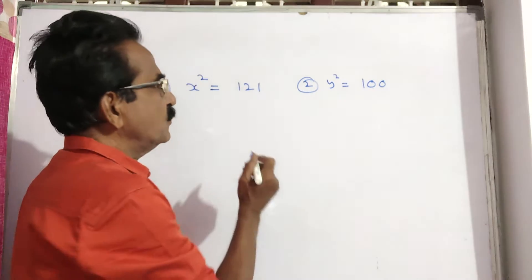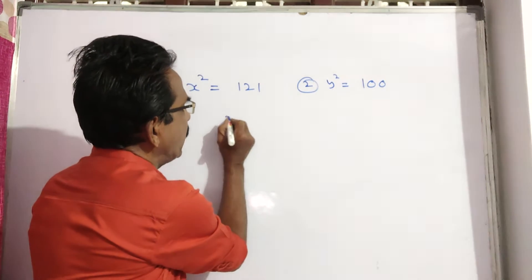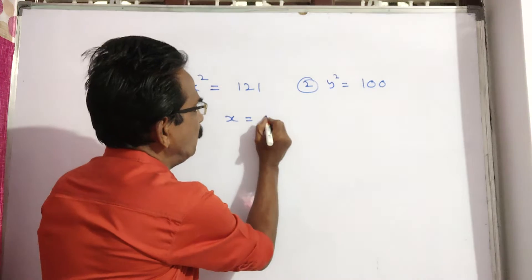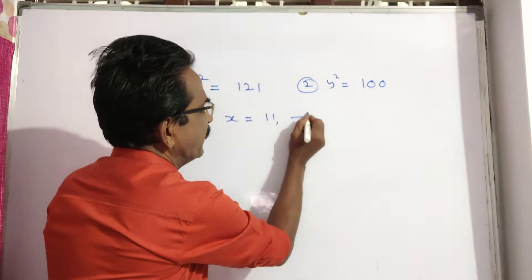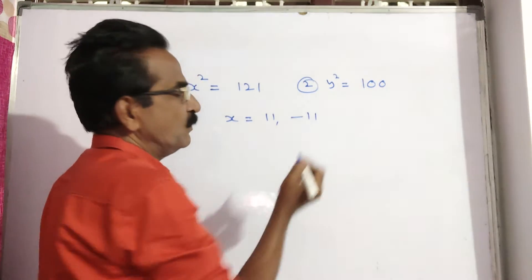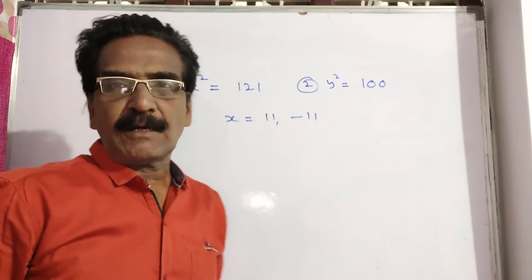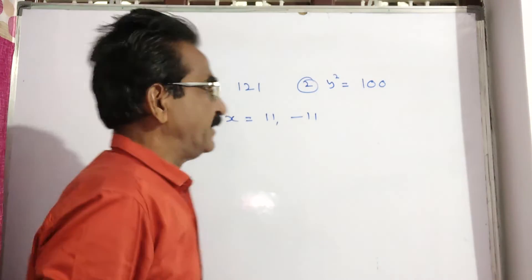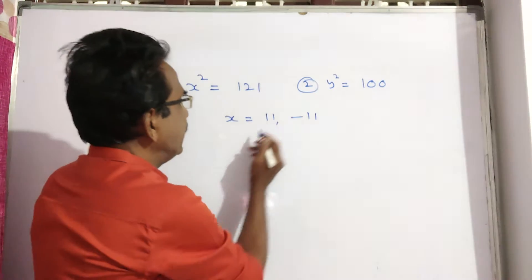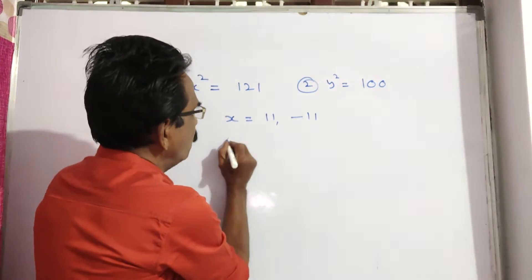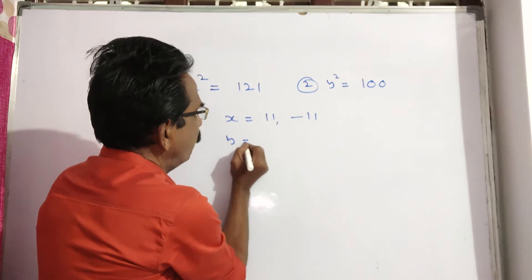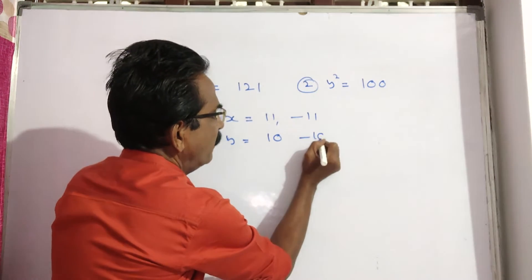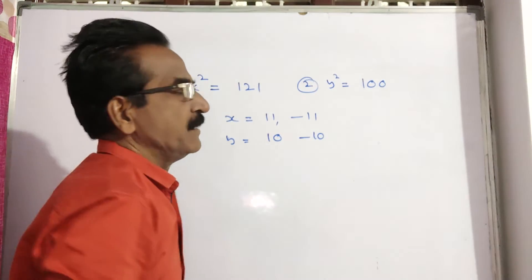x² = 121 implies x = ±11, that is plus 11 or minus 11. And if y² = 100, then y = plus 10 or minus 10.